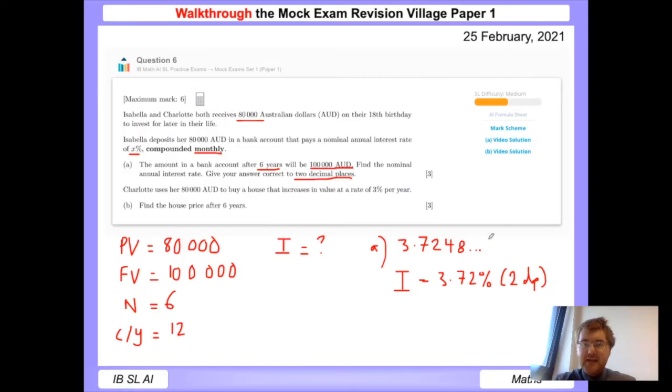So for question a, our interest rate is going to be 3.72 percent to two decimal places. Key things from this question: write down the information you know, put down a question mark for what you want to find, insert it one at a time, and then press enter for the thing that we need.